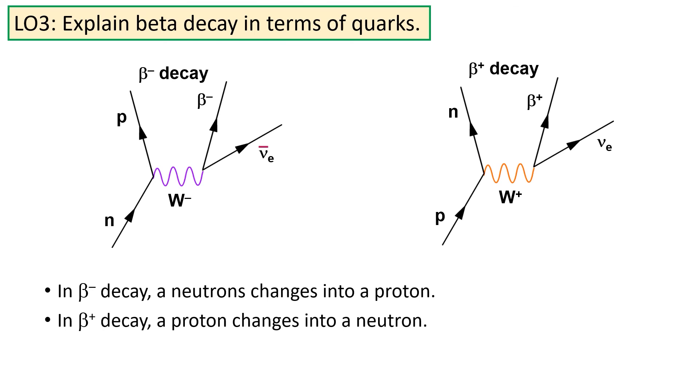Okay, so finally today, we're going to talk about beta decay. As we know from a previous lesson, in beta minus decay, a neutron changes into a proton with the release of a beta minus particle, or a fast-moving electron. In beta plus decay, a proton changes into a neutron with the release of a positron.